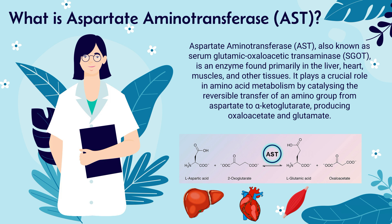To basically sum up, aspartate aminotransferase or AST is an enzyme primarily found in the liver tissue, the heart tissue, and the muscular tissue of the body. It plays a crucial role in amino acid metabolism and catalyzes the reversible transfer of amino acid groups to oxaloacetate and glutamate, and vice versa. So now that we know what AST is, let's talk a little bit about what an AST blood test is.